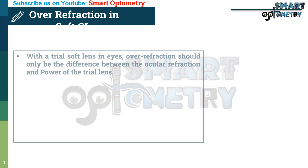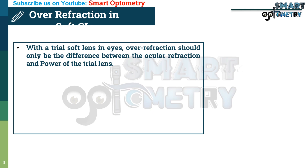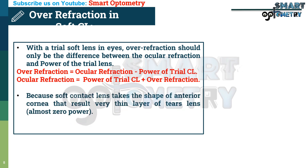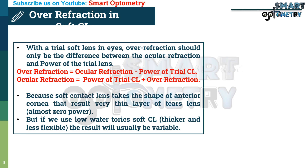Over-refraction in soft contact lens: with a trial soft contact lens in the eye, over-refraction should only be the difference between ocular refraction and power of the trial contact lens. Over-refraction = ocular refraction minus power of trial contact lens, and ocular refraction = power of trial contact lens plus over-refraction. Because soft contact lens takes the shape of the anterior cornea, this results in a very thin tear lens of almost zero power. However, if a low-water toric soft contact lens is used that is thicker or less flexible, the result will usually be variable.